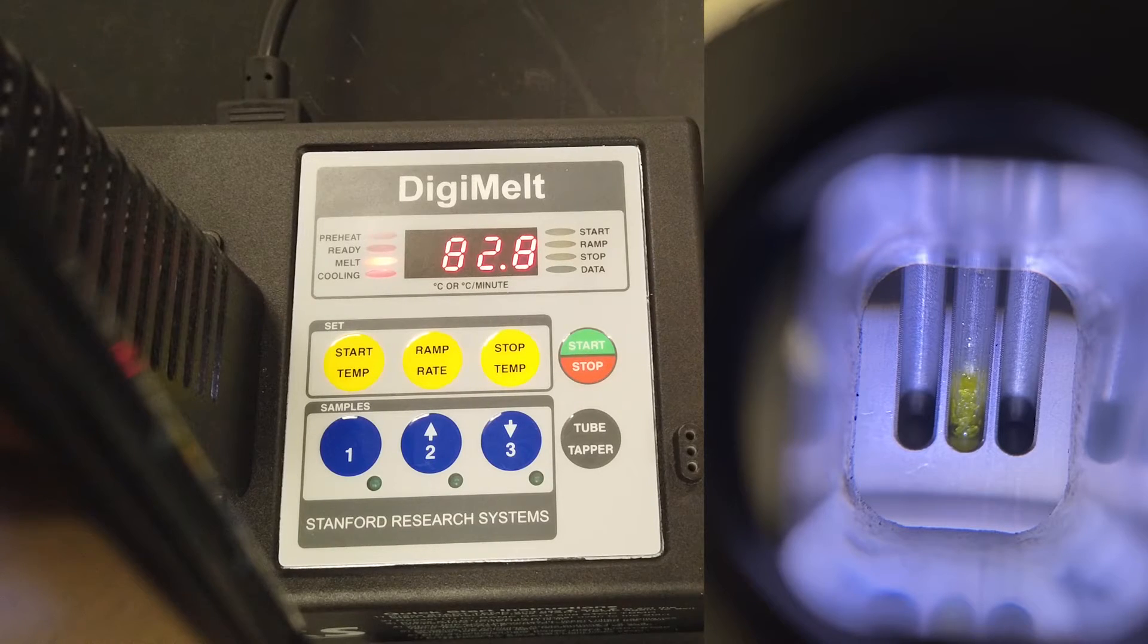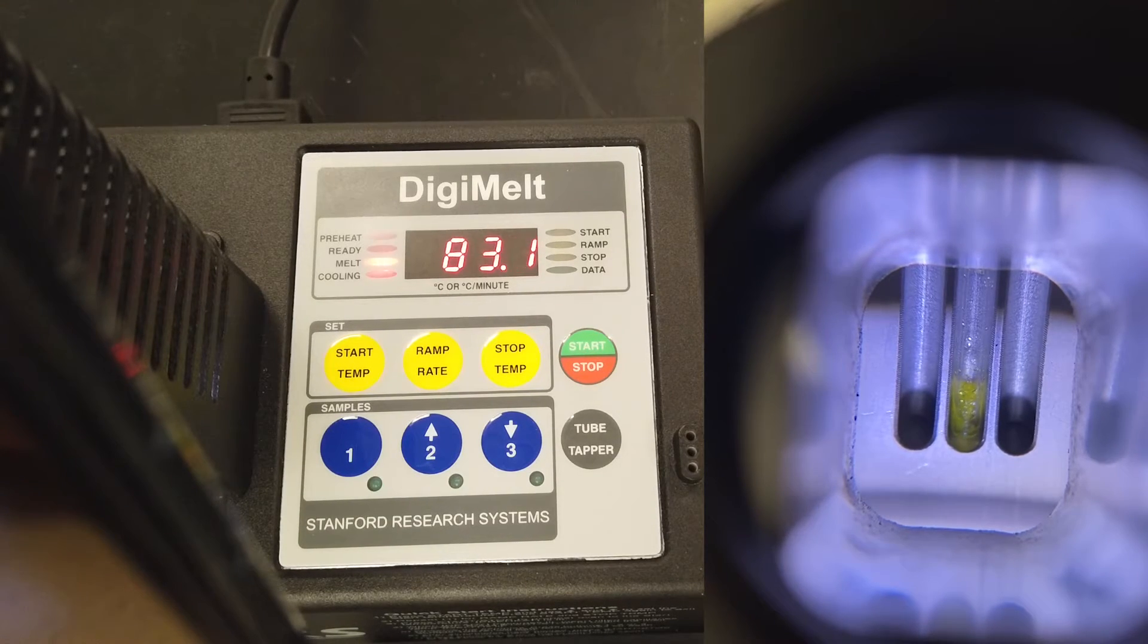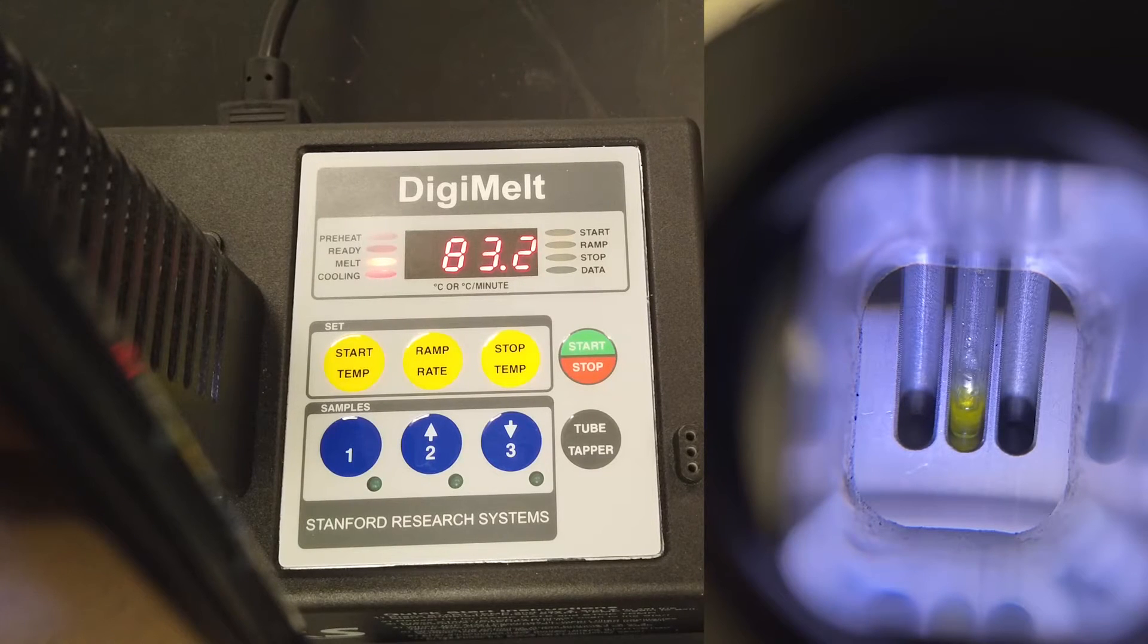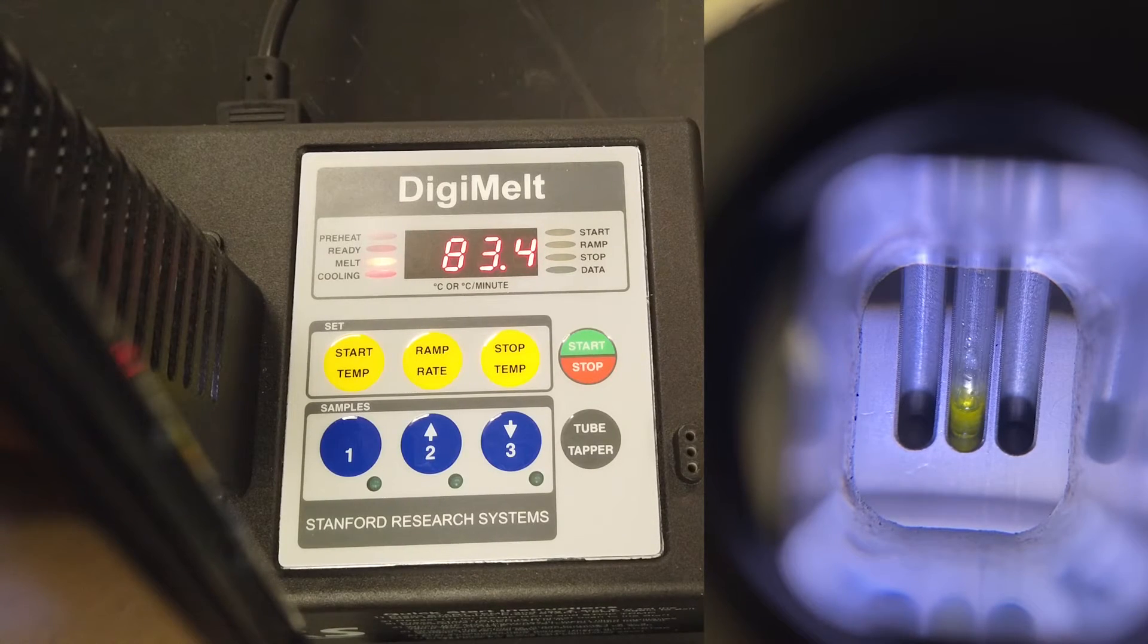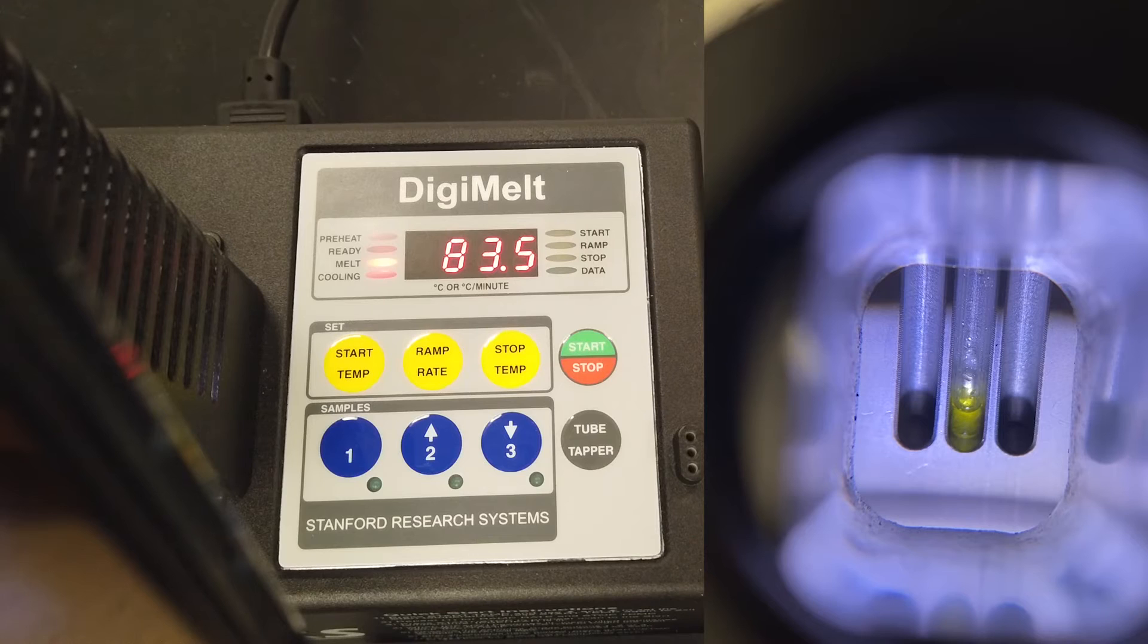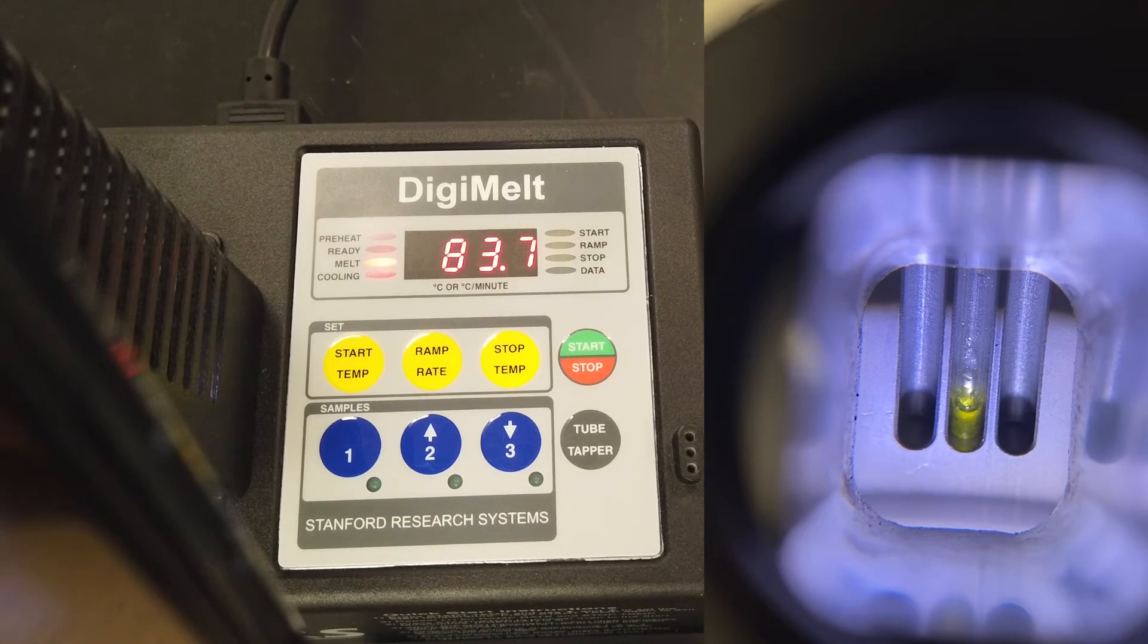Here we can see a relatively pure substance begin its melting point at around 82.2 degrees and finishes melting around 83.5 degrees. This indicates a relatively pure sample.